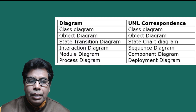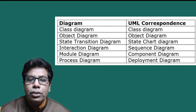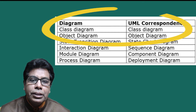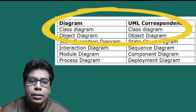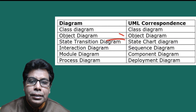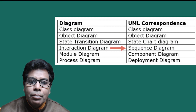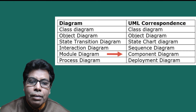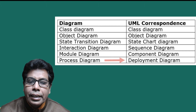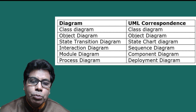Here you can see in the table the diagram and the UML correspondence. The class and object diagram — the correspondence is the same as the class diagram and the object diagram. The state transition diagram corresponds to the state chart diagram. Then the interaction diagram corresponds to the sequence diagram. Then module diagram corresponds to the component diagram, and process diagram corresponds to the deployment diagram in UML. These diagrams are used at various stages in the macro and the micro development process.